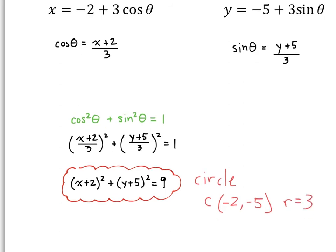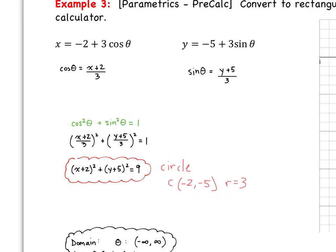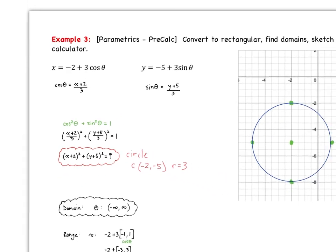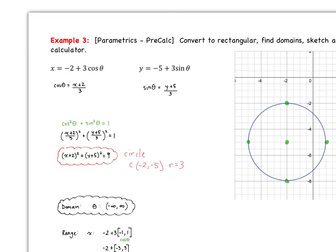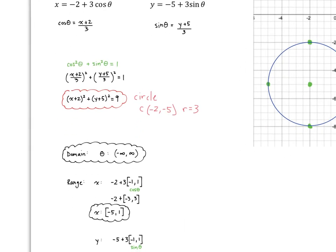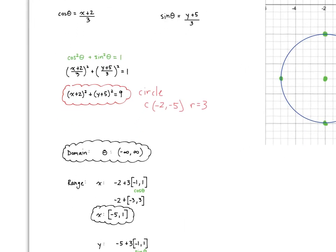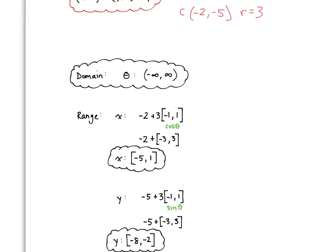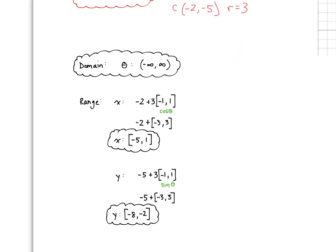We can graph the circle by identifying the center at (negative 2, negative 5) and counting 3 units up, down, right, and left for the radius. Or we can think about domain and range. The domain is theta — I can choose any value for theta and I'll get an answer for x and an answer for y.